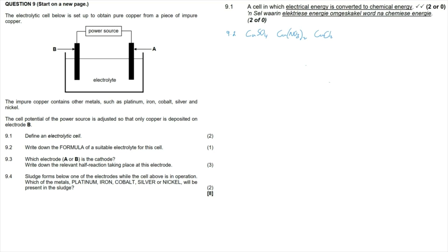Question 9.3: which electrode, A or B, is the cathode? Also write down the relevant half-reaction taking place at this electrode. We go back to the original question that tells us that copper is deposited on electrode B.